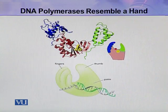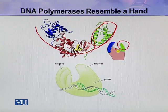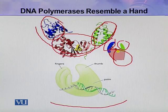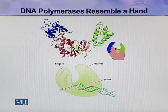In this diagram, you can see the three-dimensional structure of DNA polymerase. It has three domains: one domain resembles the thumb, another domain resembles the palm, and the third domain resembles the fingers. This DNA resides in this cleft or in this palm. This is the structure of DNA polymerase and it resembles a hand.